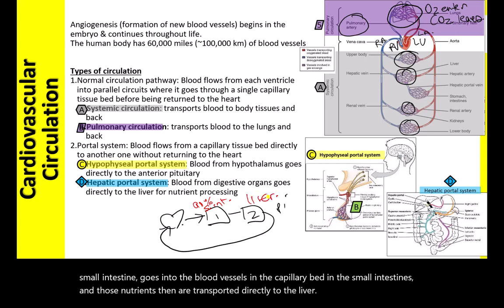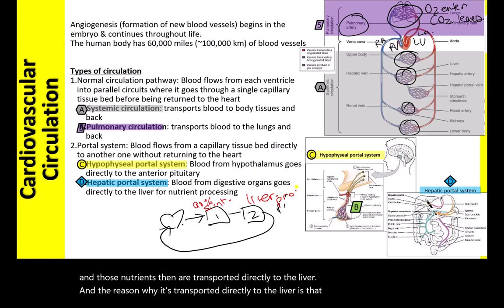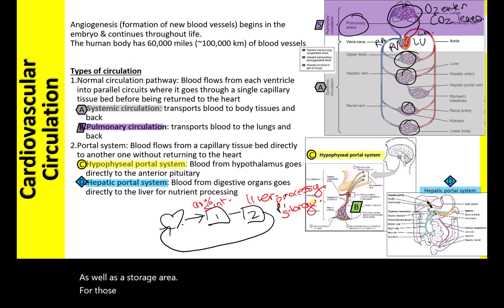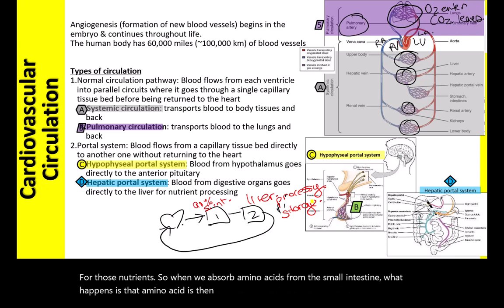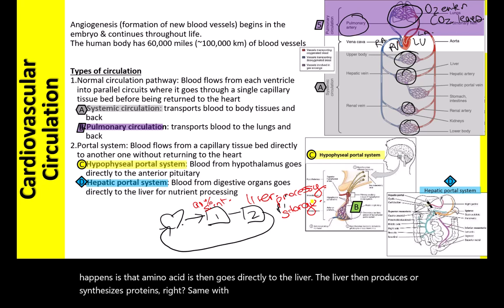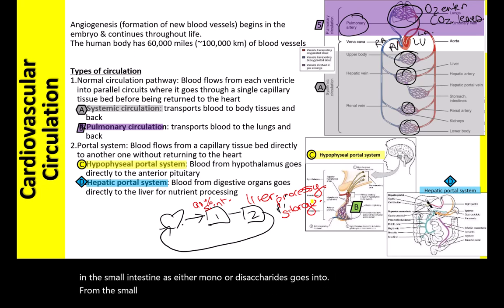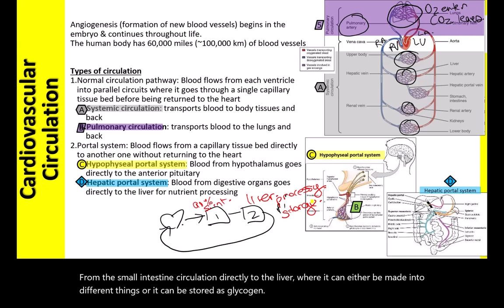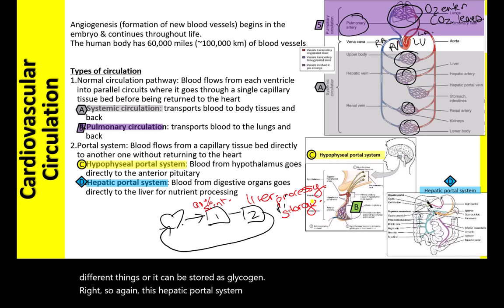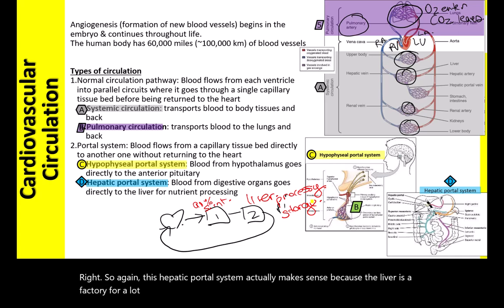The hepatic portal system transports nutrients directly from the small intestine — where 90% of absorption occurs — to the liver, which is a processing and storage area. Amino acids go directly to the liver for protein synthesis. Carbohydrates absorbed as mono- or disaccharides go directly to the liver where they can be processed or stored as glycogen. The hepatic portal system makes sense because the liver is a factory for nutrient processing and storage.